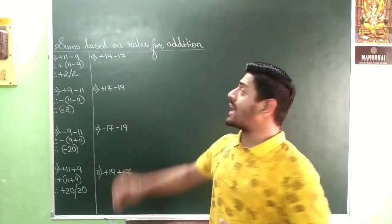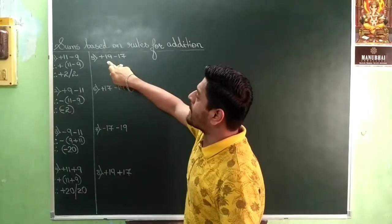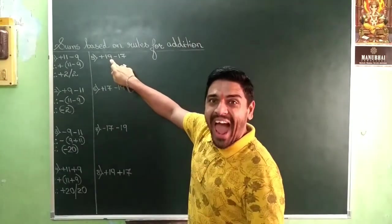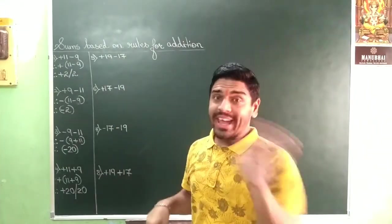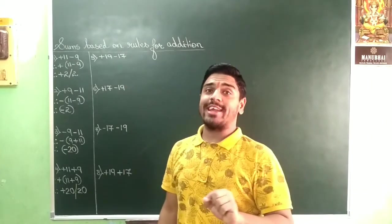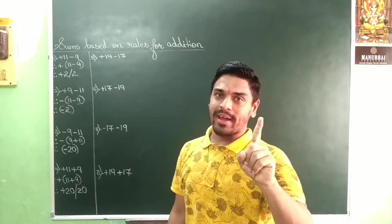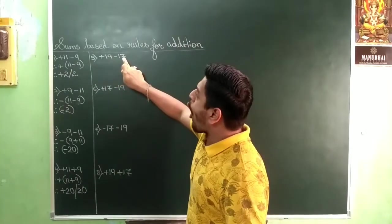So what is the rule? Well, one number is positive and another number is negative. Put the sign of the greater number. 19 or 17?